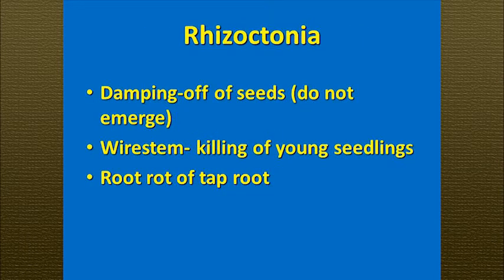The first disease I want to mention is Rhizoctonia. There are several different types of symptoms you can see with this particular pathogen. You can have general damping off of the seeds — infection of the seeds leads to pre-emergent damping off. You can also have post-emergent damping off, usually preceded by the symptom we refer to as wire stems. Basically you get a constriction of the stem; the plants will generally lodge and eventually die. You can also have general rotting of the roots, which will stunt the plants and decrease your yield.